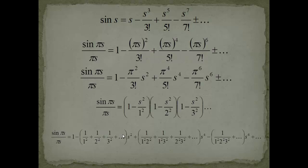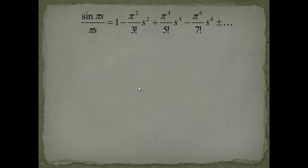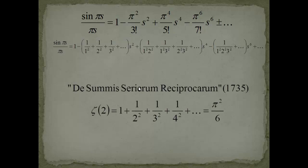What he did was he said if the Taylor expansions are unique, then these both coefficients have to be equal to each other. What he found out was that this strange sum was equal to pi squared over 3 factorial, which is actually 6.